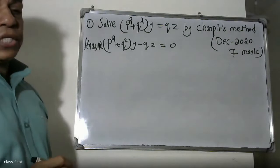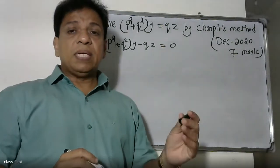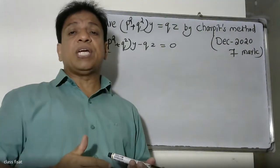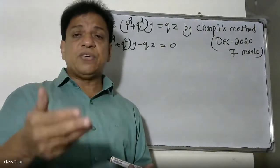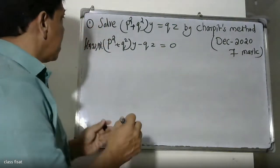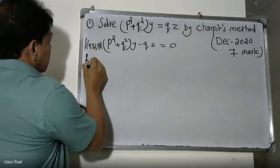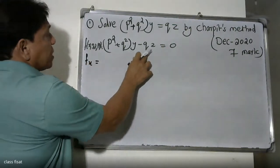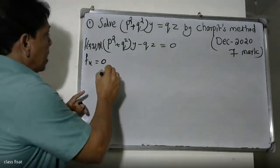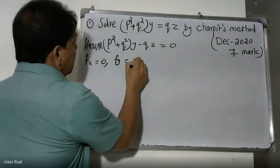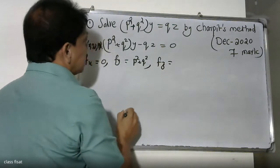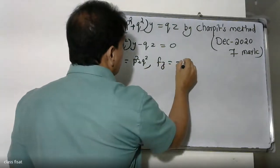We compute the partial derivatives. Taking partial derivatives: Fx is zero, since x does not appear explicitly. Fy is p squared plus q squared. Fz is equal to minus Q.